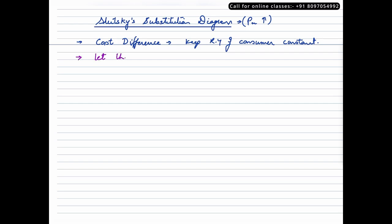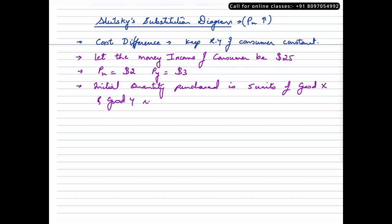So let the money income of the consumer be $25. This is the same as the previous video. And just like the previous video, price of commodity X is $2 and price of commodity Y is $3.